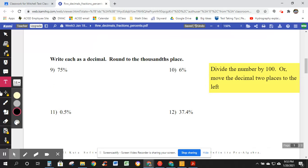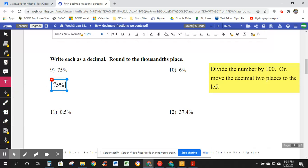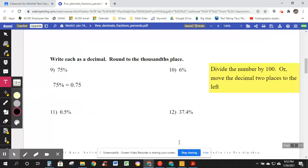or move the decimal two places to the left. So, 75%, 75% is equal to two decimal places to the left. Well, 0.75. I think that's it. Let's try it again. 37.4% is equal to two decimal places to the left, 0.374 decimal. Round to the thousandth place. I guess that would mean there would be a zero. This is the tenths, hundredths, thousandths.